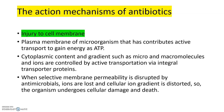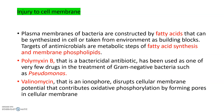The cell membrane maintains selective membrane permeability. When this selective membrane permeability is disrupted by antimicrobials, ions are lost and the cellular ion gradient is distorted. The organism undergoes cellular damage and death due to leakage of contents. The main targets of these antimicrobials are the metabolic steps of fatty acid synthesis and membrane phospholipids.